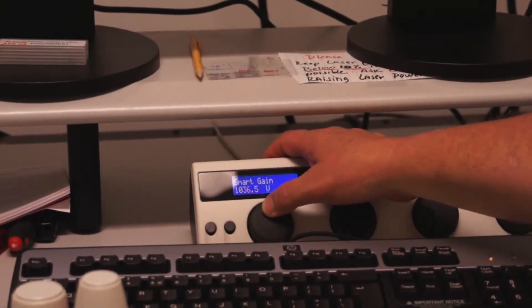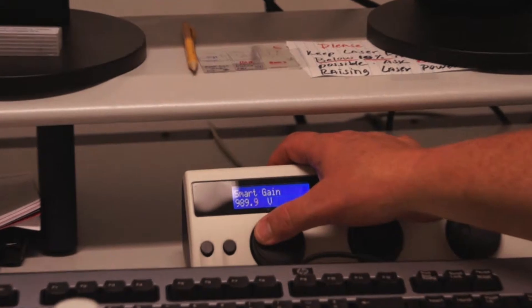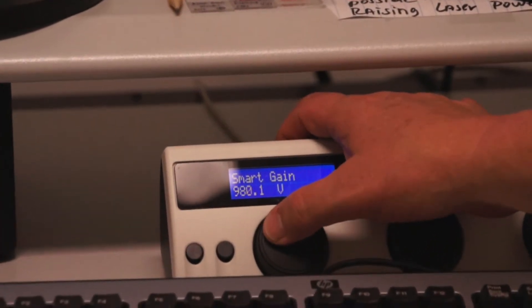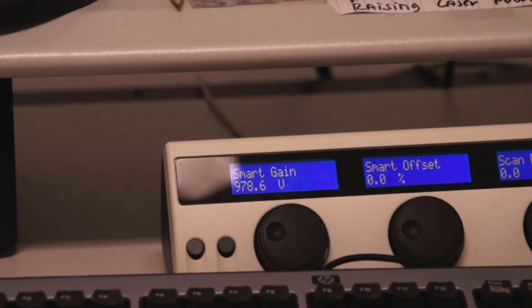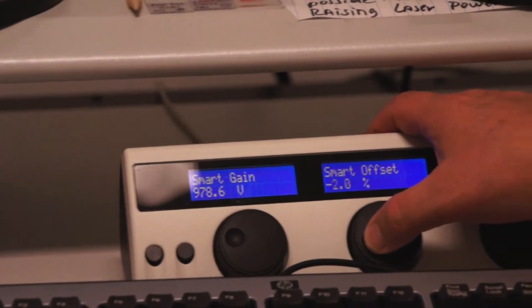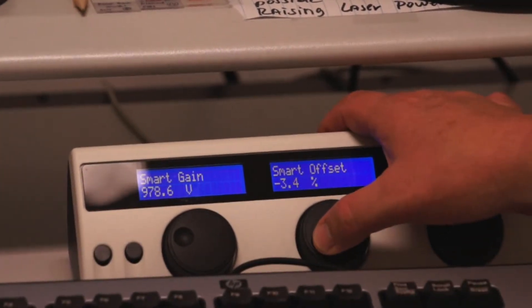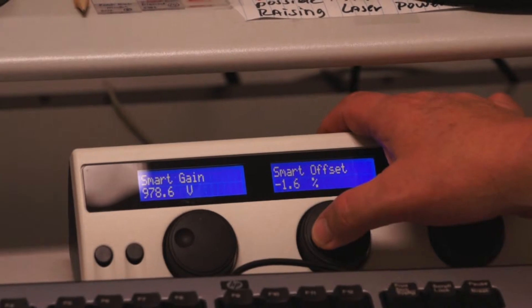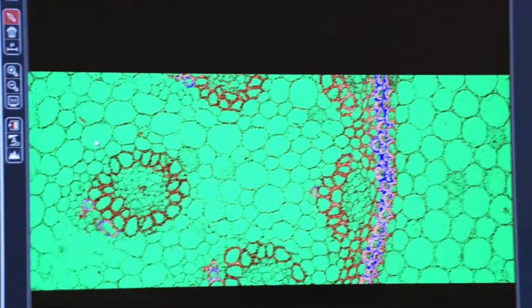Again, we want to be around 900, maybe 950, certainly below 1,000. So we're at 978 on our smart gain. Let's check our offset. Our offset should be minus about .3, .4. Remember, we can always use the lookup table to show us our green and blue pixels.